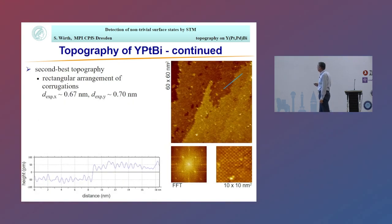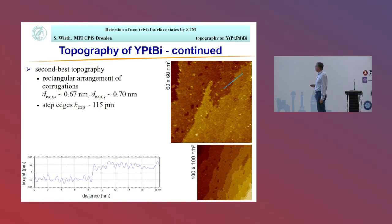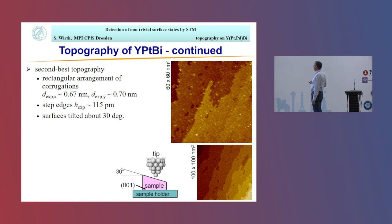So we went back to the platinum, and the second best topography we found is shown here. You see it's not quite as nice as the 111 direction, but we do see a regular arrangement of corrugations with this distance as shown here. They come from a Fourier transform, but you can also get it directly from zooming into nicer areas. We also get step edges with a height of a bit more than 100 picometers. Actually, if we go for an area like this where we have quite an assembly of step edges, we get an average of 125 picometers approximately.